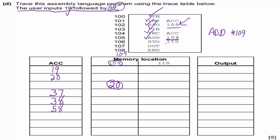Then STO 110 stores 58 into address 110. Then OUT outputs the value. There's an extra column left over — that's okay; they're just making sure you're not guessing. The grader wants to see the accumulator has the right values in the right order: address 109 holds only 20, address 110 holds only 58, and the output happens at the very end.